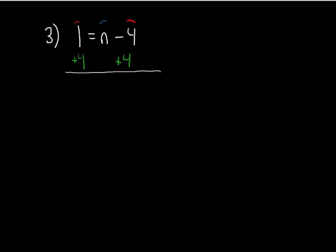Reading from left to right, 1 plus 4 is 5. Didn't do anything to the n, so that comes straight down. The equal sign also comes straight down, and the positive 4 and negative 4 make a zero pair and cancel out. So the answer to number 1 is n equals 5.